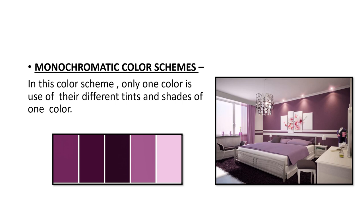The first color scheme is monochromatic color scheme. In this scheme, only one color is used. Mono means one, chromatic means color. In this scheme, only one color is used along with its tints and shades to complete the color scheme. For example, a bedroom decorated using only purple color in its tints and shades.